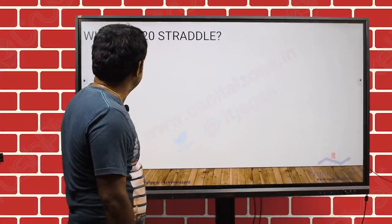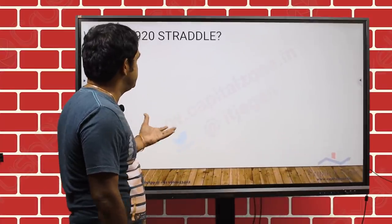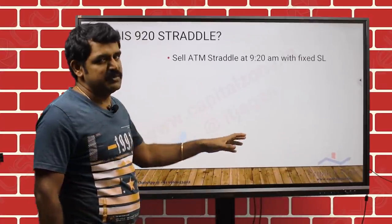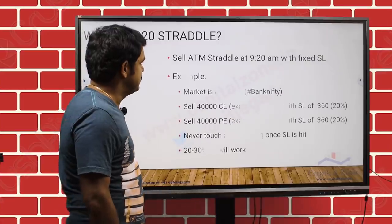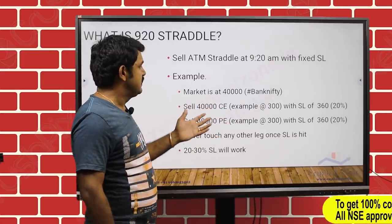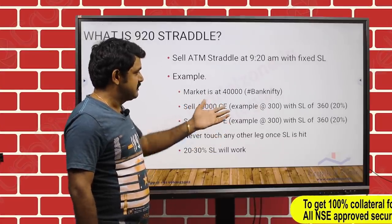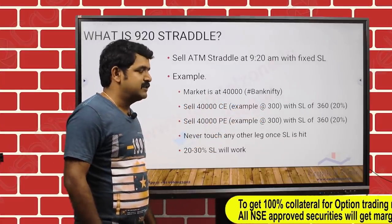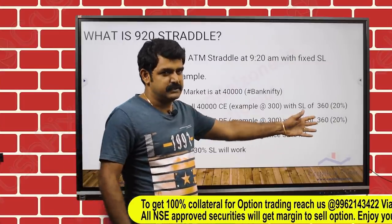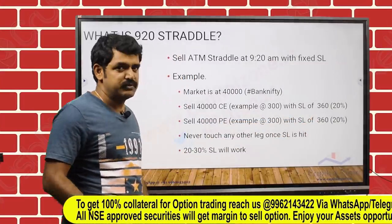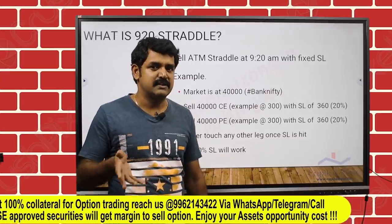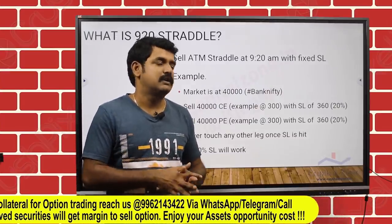So this is a simple 920 straddle — you sell the at-the-money call and at-the-money put with a stop loss of 20 percent. For example, if the market is at 40,000, the at-the-money premium is around 300, so 20 percent stop loss is going to be 360. If you want to know the 920 straddle in detail, the respective link is available in the description.